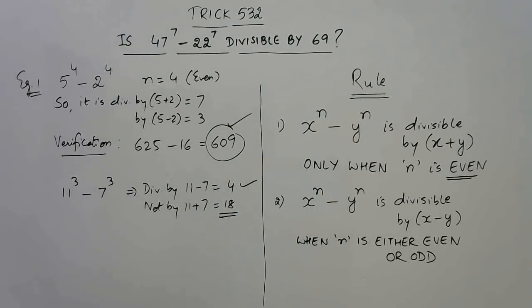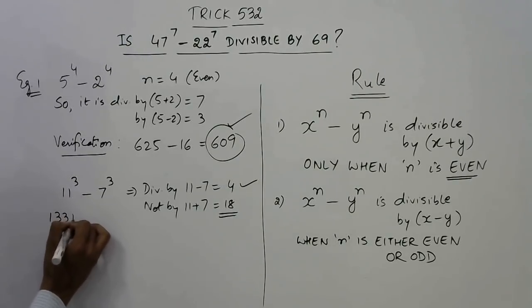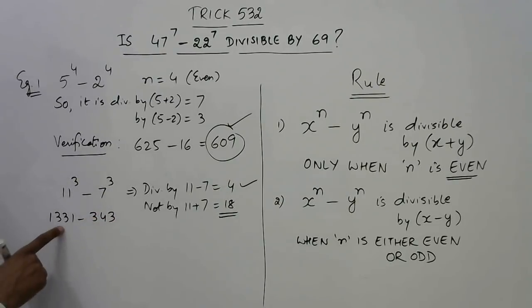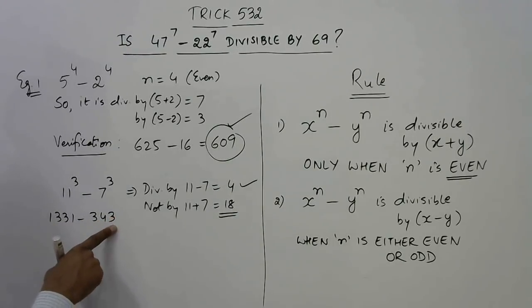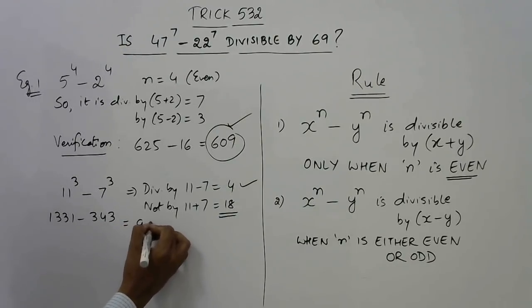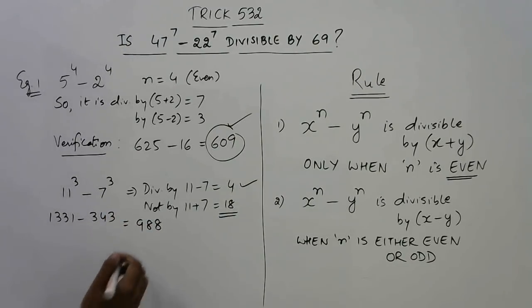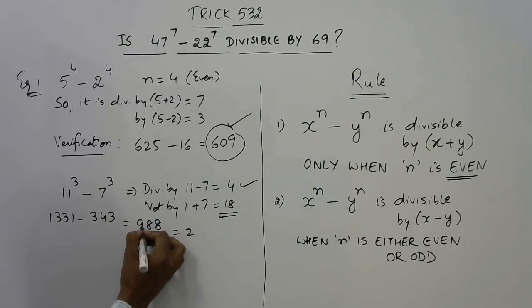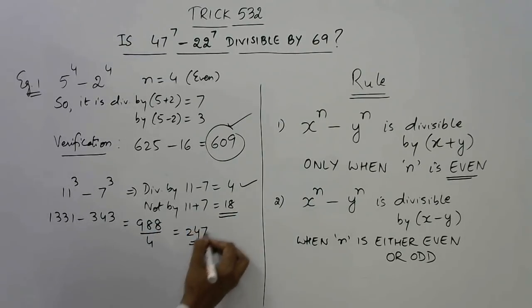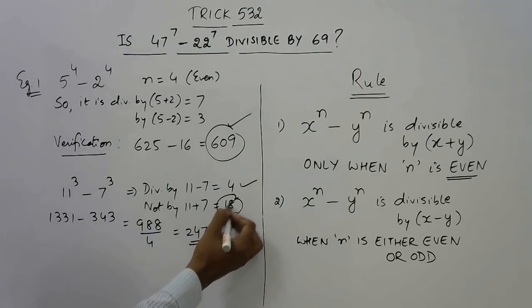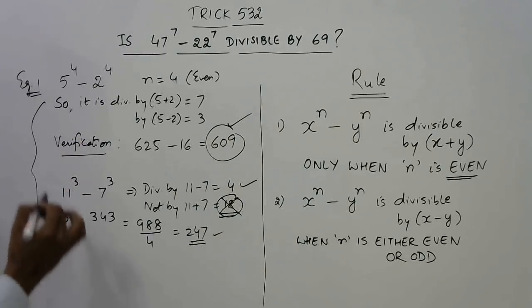So divisible by 4 but not by 18. You can verify very quickly: now 11 cube is 1331 and 7 cube is 343. 1331 minus 343 will be 988. Now you check divisibility by 4: this will be 247, exactly divisible by 4, verified. But it is not divisible by 18. So this is the very important concept.